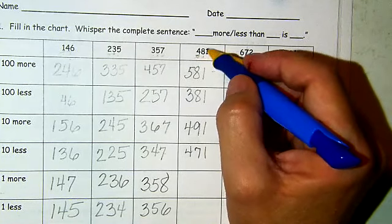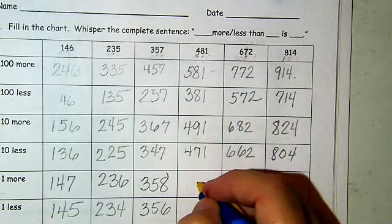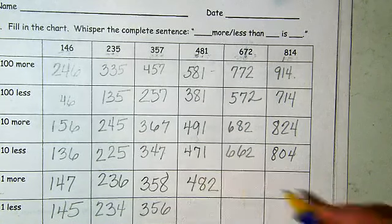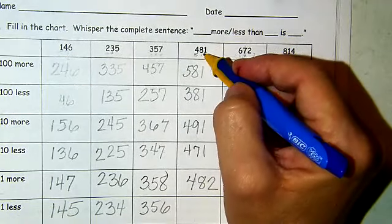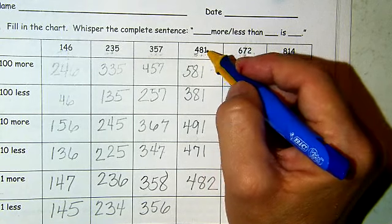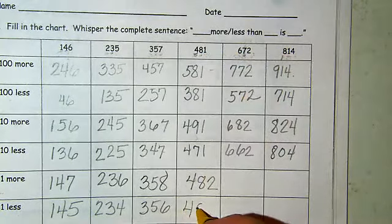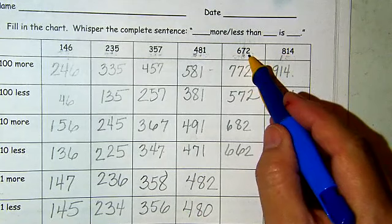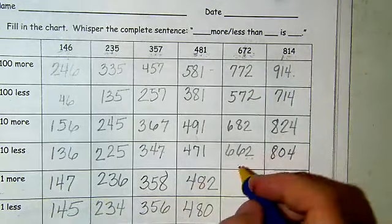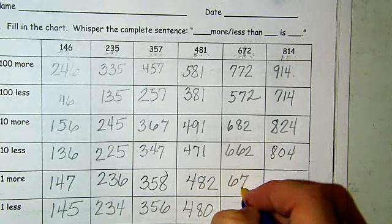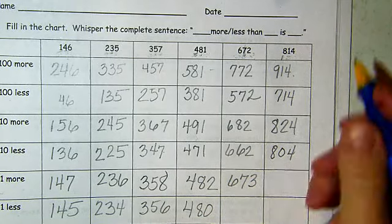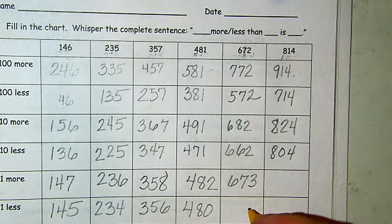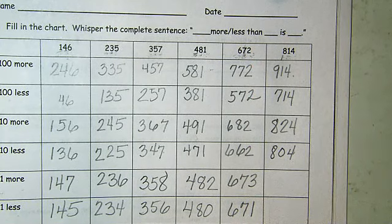481 — one is my digit in the ones place. So if I have one more, it's going to be a two — so 482. If I have one less than 481, that's going to be a zero and it'll be 480. 672 — two is in the ones place. One more would be three and it'd be 673. Take one away from that two — one less — we're going to have a one there: 671.